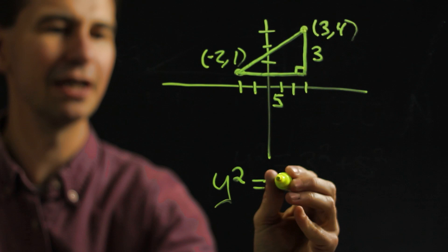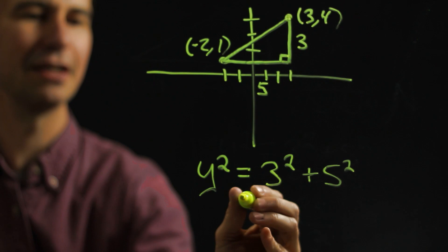So in this case you would get three squared plus five squared. And if you multiply those all together you come out with 34.